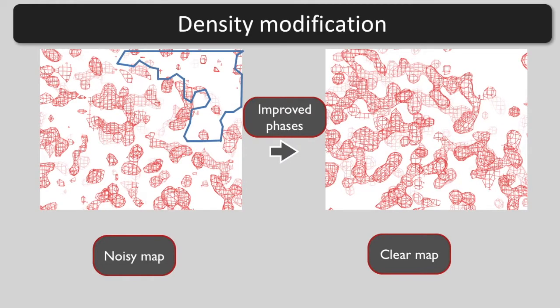So now, how do we do this in practice? We are going to see how this is done in the procedure known as statistical or maximum likelihood density modification.